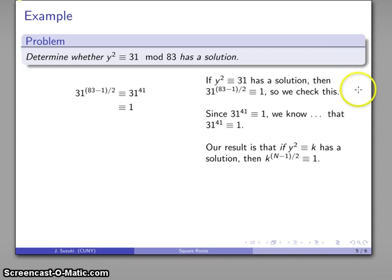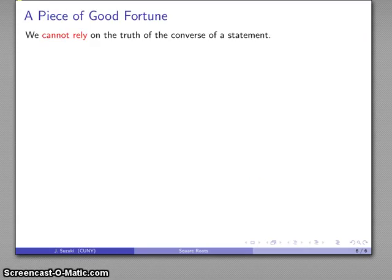Our result is that if the congruence has a solution, then k to the power of n minus 1 over 2 is congruent to 1. It does not tell us what we get if k to the power of n minus 1 over 2 is congruent to 1. In general, remember, we cannot rely on the truth of the converse of a statement. It might be true, it might not be true.